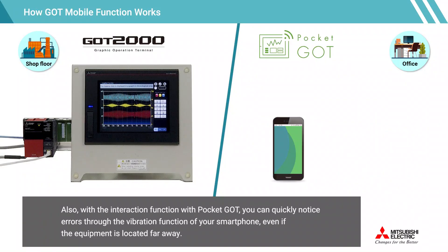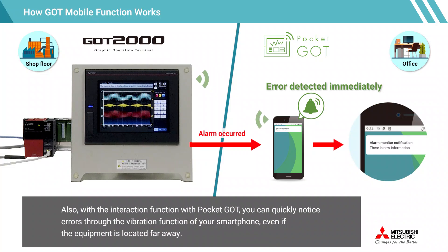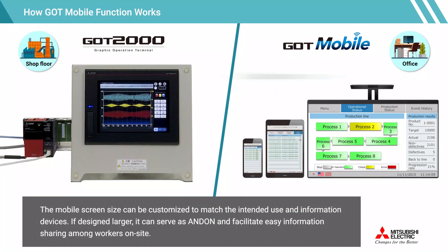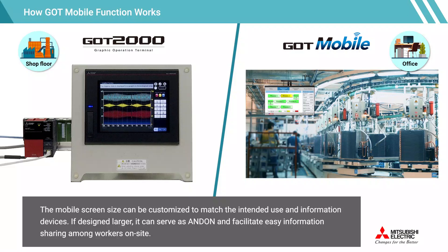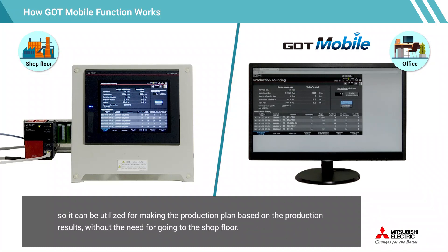With the interaction function with Pocket GOT, you can quickly notice errors through the vibration function of your smartphone, even if the equipment is located far away. The mobile screen size can be customized to match the intended use and information devices. If designed larger, it can serve as an end-on display and facilitate easy information sharing among workers on-site. By using the GOT mobile function, the production status can be displayed at places other than the shop floor, so it can be utilized for making the production plan based on production results, without the need to go to the shop floor.